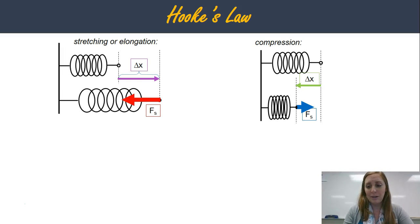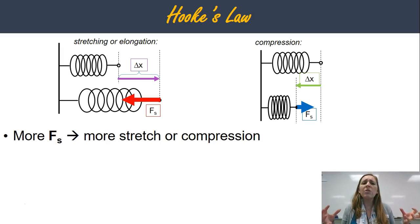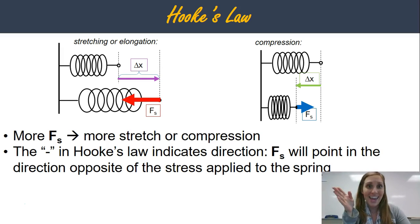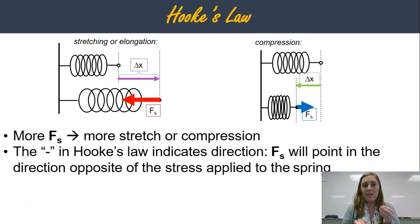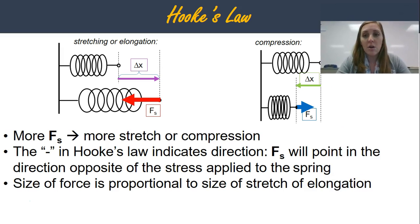Let's write down a few rules. The more the spring force is, the more stretch or compression happened. So the more you stretch a spring, the more it's going to pull or push to get back to its initial position. The negative in Hooke's Law — negative k times delta x — is just talking about the direction. The spring force is always going to point in the direction opposite to whatever stress is applied to your spring. So if you pull a spring down, it wants to go up. If you push a spring up, it wants to go down. Same for right and left — if you pull it to the right, it's going to want to go to the left.